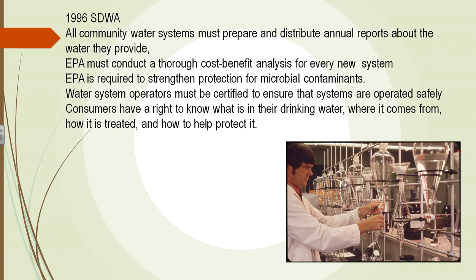The Safe Drinking Water Act required the EPA to conduct a cost-benefit analysis for every new community water system. It required protection from microbial contaminants and training for all workers in the system to ensure Americans were free from contamination. It also established the public's right to know what is in their water, where it comes from, how it is treated, and how it is protected.